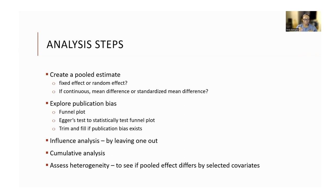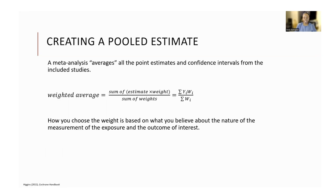So now that you know what is involved in the analysis, let's dive into creating the pooled estimates. The pooled estimate is the main reason most people carry out a meta-analysis in the first place. At the most basic level, a meta-analysis averages the effects across all the included studies — say you have 10 studies — and it does this by creating a weighted average of all the point estimates. It could be the mean, the mean difference, the odds ratio, or whatever, along with their confidence intervals. The weighted average is given by a formula where the numerator is the sum of the product of the point estimate from each study and its weight, while the denominator is the sum of all the weights of the primary studies included in the meta-analysis.